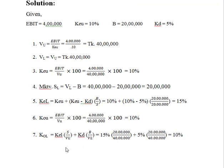We have KEL at 15%, with debt of 20 lakhs and firm value of 40 lakhs. Plus KD is 5% given, with debt 20 lakhs and firm value 40 lakhs. So ultimately, the WACC, KUL or KOU, equals 10% with a value of 10 lakhs.